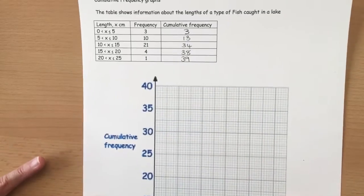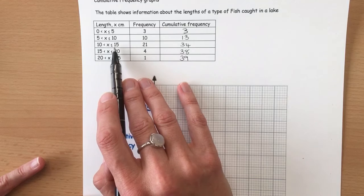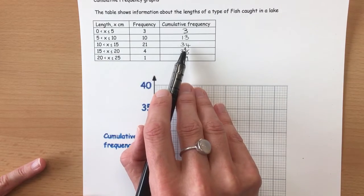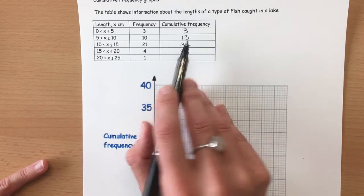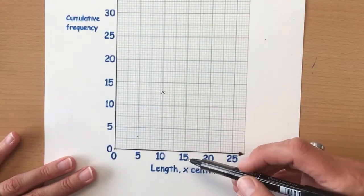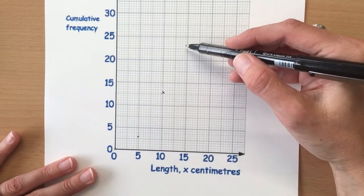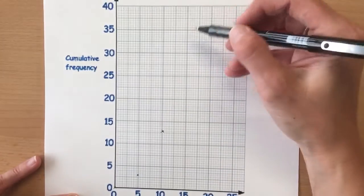The next row in the table is between 10 and 15, so we need to make our graph go up to 34. Between 10 and 15, we find 15 at the bottom and we need to go up to 34.